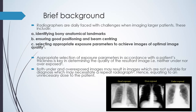We'll start with a brief background. Radiographers are daily faced with challenges when imaging larger patients. These could include identifying bony anatomical landmarks, ensuring good positioning and beam centering, and selecting the appropriate exposure parameters to achieve images of optimal image quality. The appropriate selection of exposure parameters in accordance with the patient's thickness is key in determining the quality of the resultant image — that is, the resultant image is neither under nor overexposed. Both under and overexposed images may result in images which are not suitable for diagnosis, which may necessitate a repeat radiograph, hence equating to unnecessary dose to the patient.